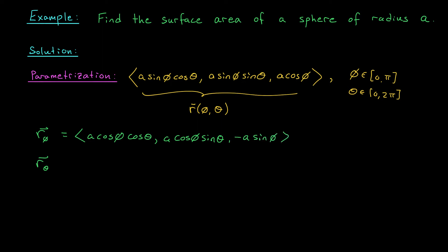What about r theta? Well, this time we're going to differentiate with respect to theta, right? That's going to give us minus a sine phi sine theta, a sine phi cos theta, and 0, right? There's no theta in our z term. Alright, we have r phi, we have r theta. We need their cross product.